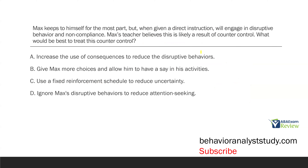Max keeps to himself for the most part, but when given a direct instruction, will engage in destructive behavior and non-compliance. Max's teacher believes this is likely a result of counter-control. What will be best to treat counter-control? Counter-control is typically an emotional or aggressive reaction to an aversive, or when given a direct instruction. Picture a learner presented with punishment or a task — they try to control the situation because of a perceived lack of control through emotions or aggression. That's what Max is doing: given a direct instruction, he becomes disruptive and non-compliant.